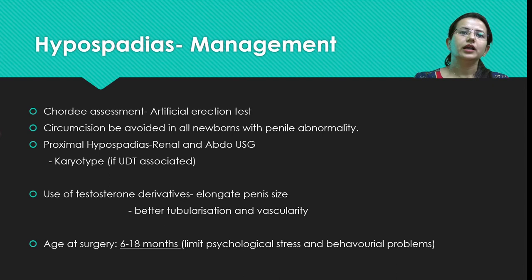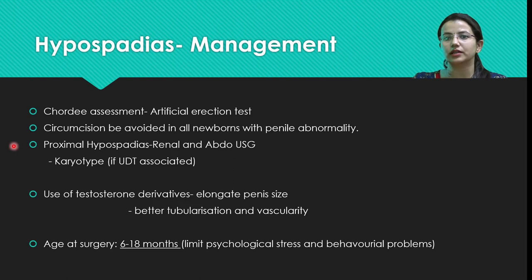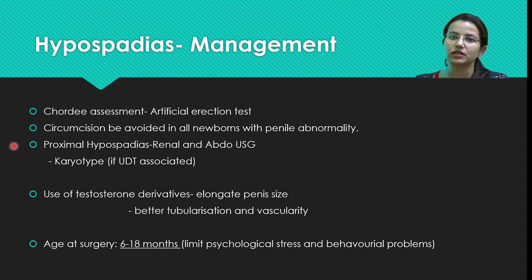For proximal hypospadias, additional investigations are needed, such as renal or abdominal ultrasound to look for associated anomalies. Karyotyping should be done if disorder of sexual differentiation is suspected, particularly if there is associated undescended testis or inguinal hernia with hypospadias.